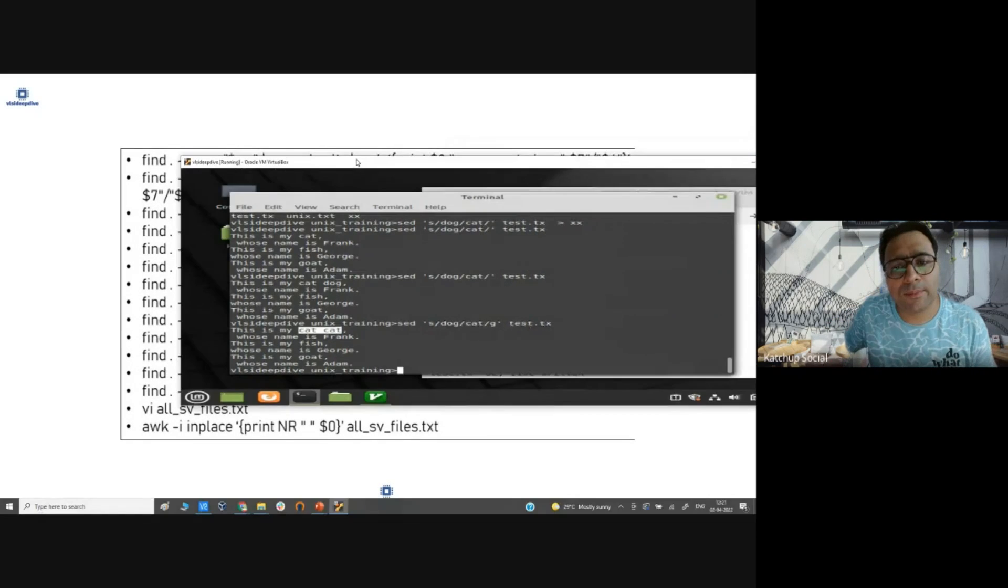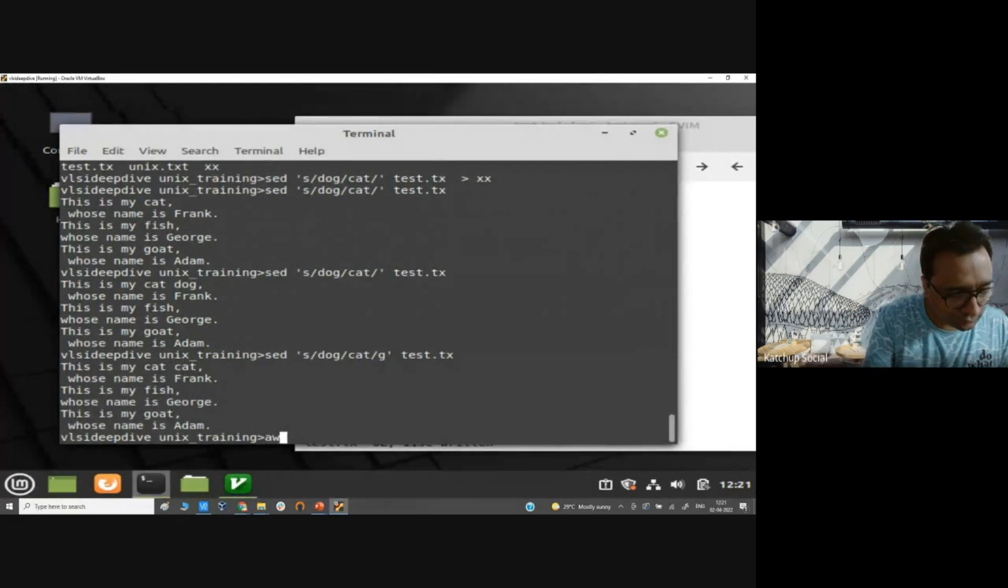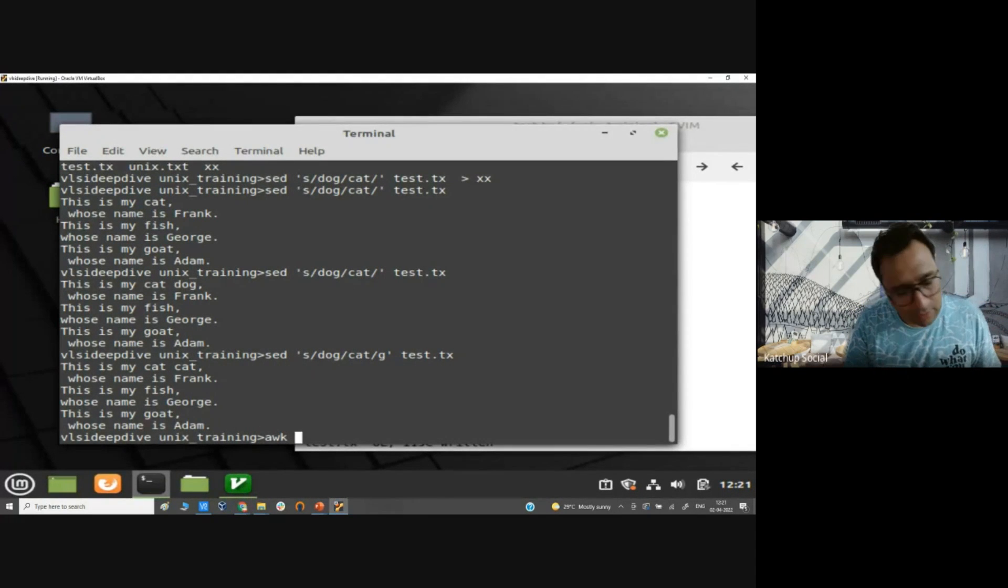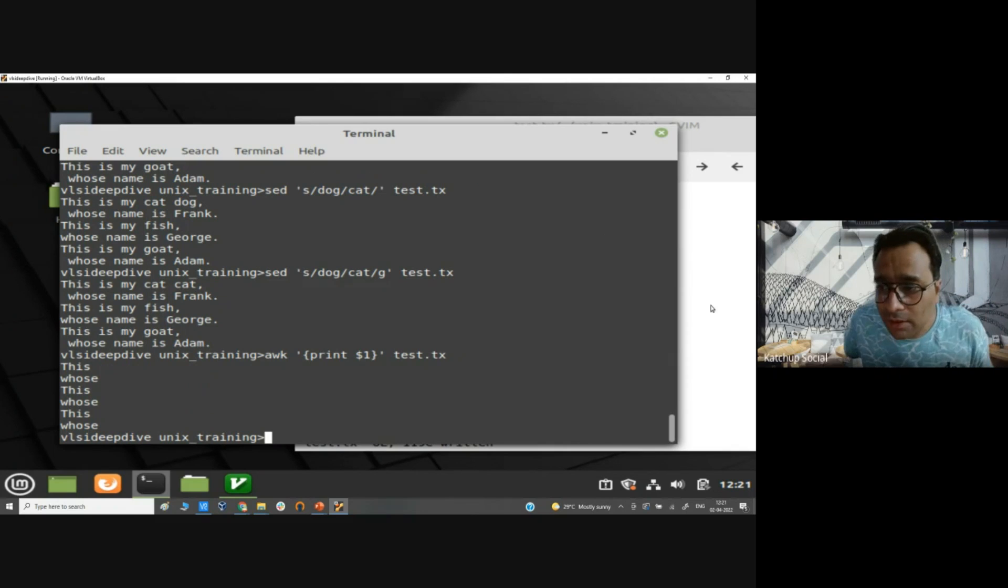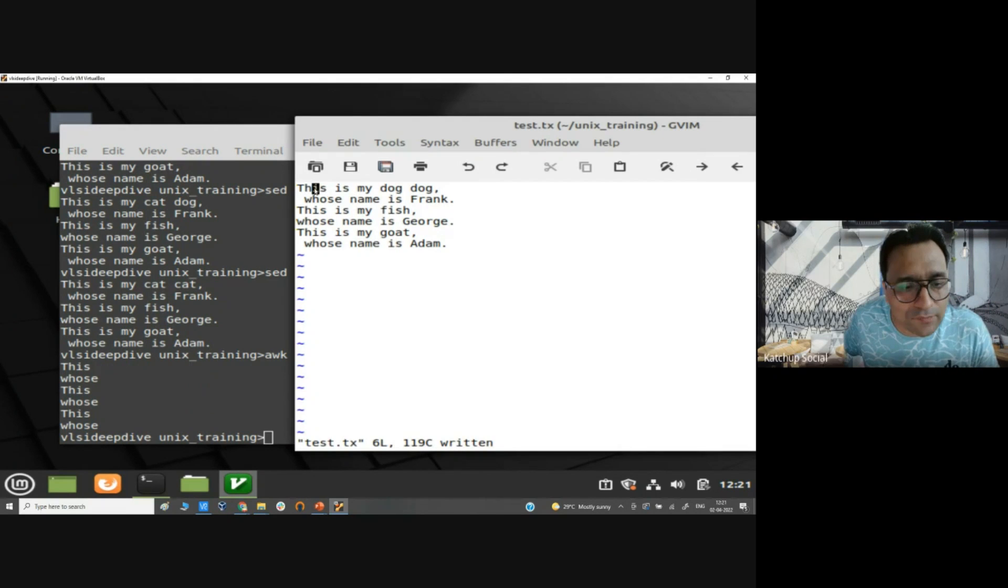Let me show you awk command. Let's say I want to print first column in my file, so I will say print $1 - this is the syntax. What it is doing is it's figuring out this is the first column; space is used. It's printing out the first column and space is used to determine.